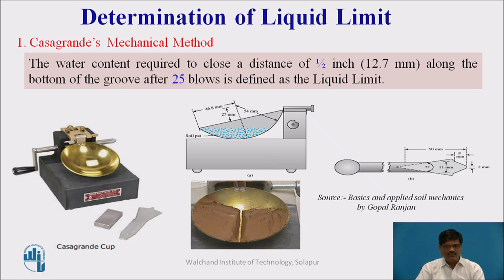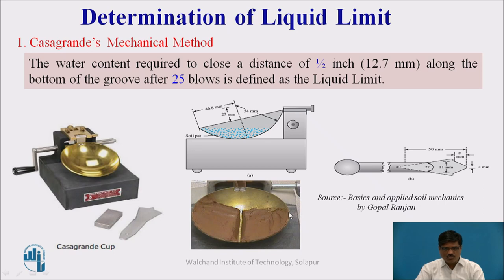What we are supposed to do is: first of all, you have to take a fine-grained soil passing 425 microns, and add some water to prepare a paste of the soil. That paste is to be filled in this cup. After filling, we have to make a groove inside with the help of a grooving tool. This is a typical grooving tool with standard dimensions available in the laboratory, having a gap of 2 mm at the edge. With the help of this grooving tool, a separation is made so that we can see a groove of almost 2 mm width. Once the groove is made, we give blows to the cup by rotating the handle, so the cup is raised and allowed to drop on the hard rubber pad, which creates an impact.